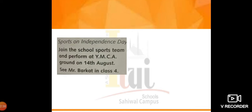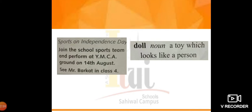The next one reads: 'Join the school sports team and perform at YMCA Ground on 14th August. See Mr. Burkut in class 4.' This is an announcement or circular. It might be placed on the office door, office wall, or office board — somewhere students can see and read it.